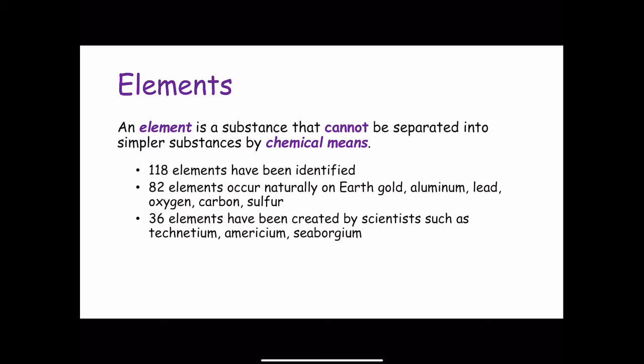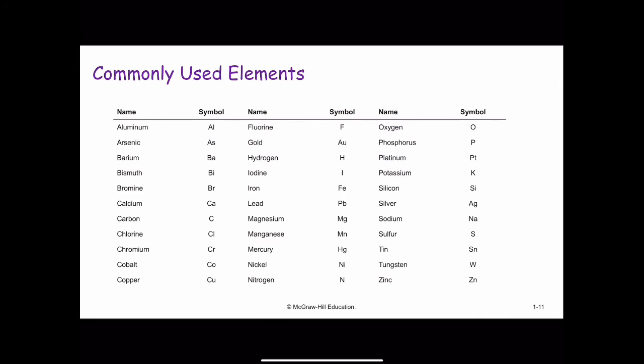For convenience, chemists use symbols of one or two letters to represent the elements. The first letter of a symbol is always capitalized, always an uppercase letter, but the following letters are always lowercase. For example, Co is the symbol for cobalt, whereas if I was to have capital C capital O, that's the formula for carbon monoxide, which comes out in your car's exhaust. This table shows the names and symbols of some of the more common elements.